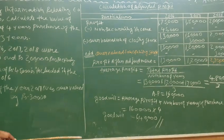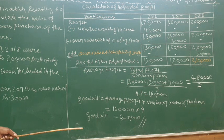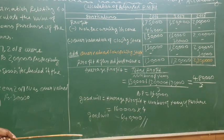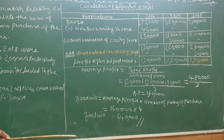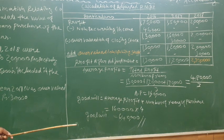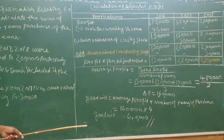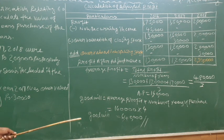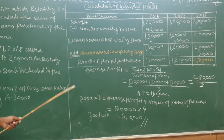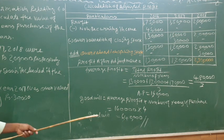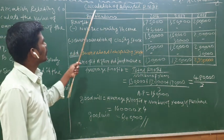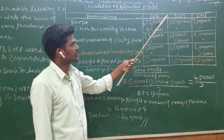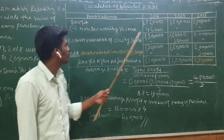Now, to find goodwill, we need the average profit. Let's calculate the average profit for the years 2016, 2017, and 2018. The non-recurring income needs to be deducted, so we minus the Rs. 45,000 from 2016's profit.